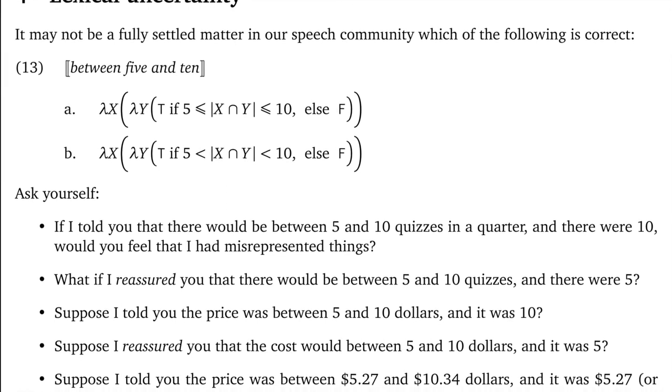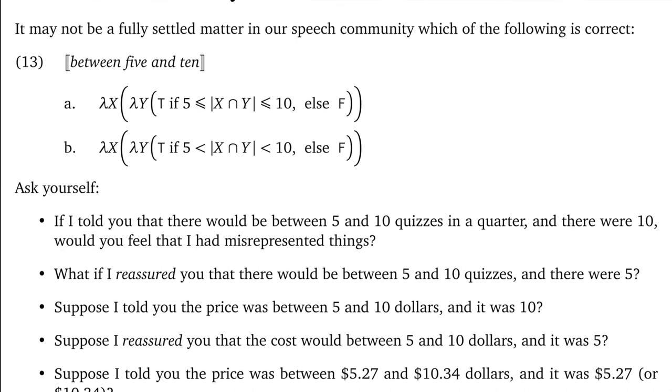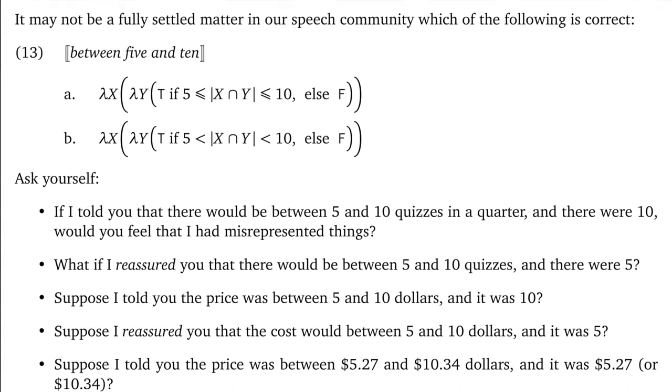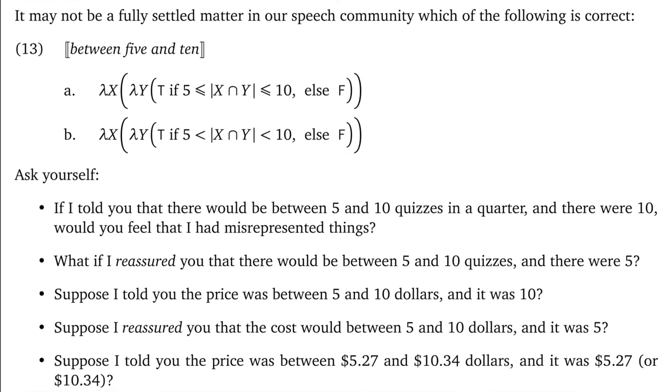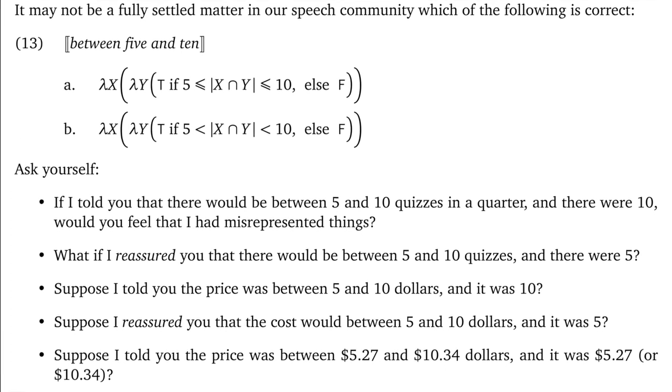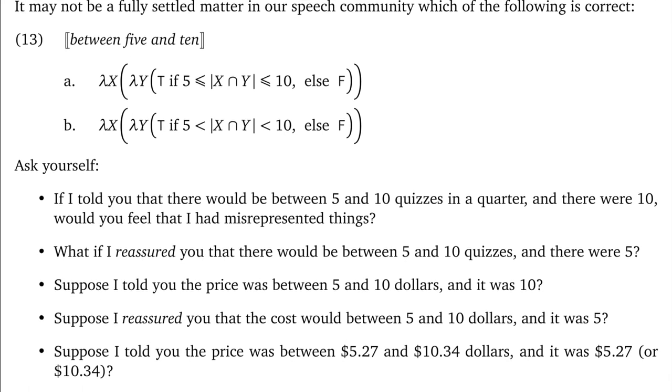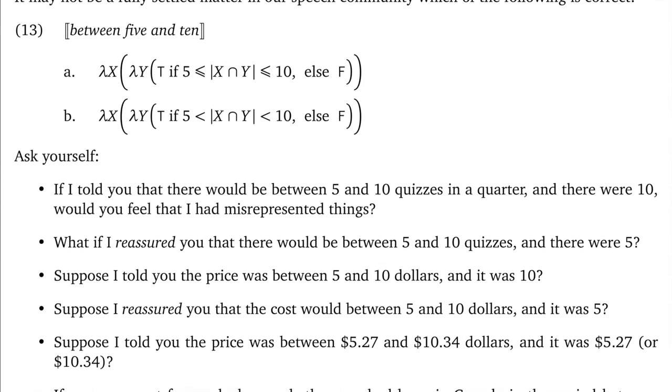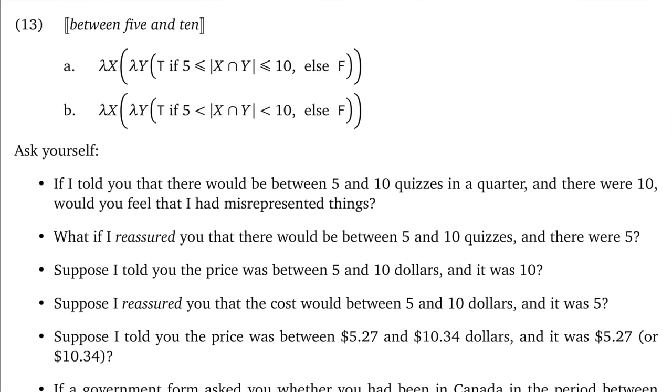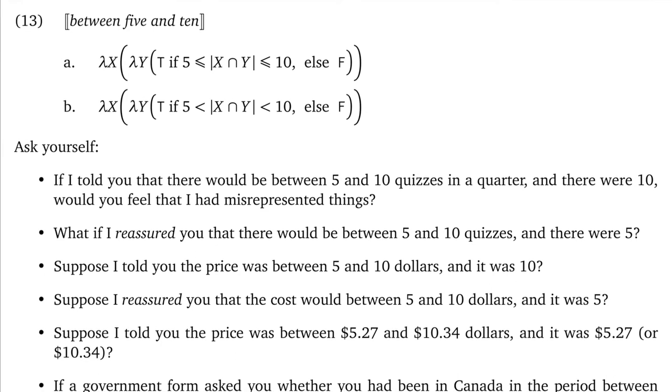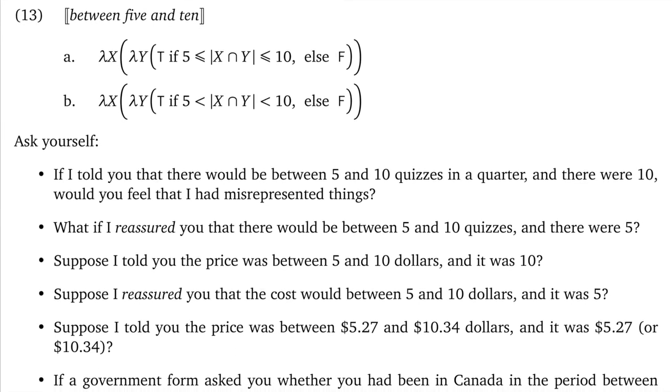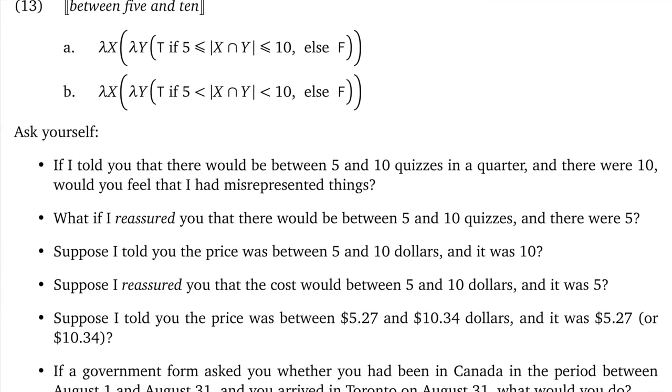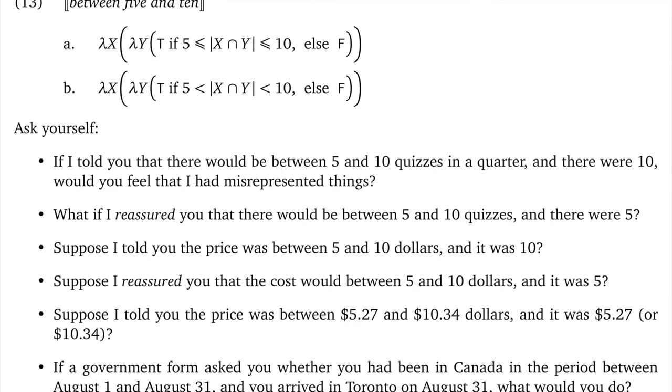What we regard as good and bad or desirable and undesirable may be shaping our intuitions here. Suppose I told you the price was between five and ten dollars and it was ten. Or suppose I reassured you that the cost would be between five and ten dollars and it was five. Did I speak truthfully or did I lead you astray? Things might be different if we move to more precise values as well. Suppose I told you the price was between five dollars and twenty seven cents and ten dollars and thirty four cents and it was five twenty seven or ten thirty four.